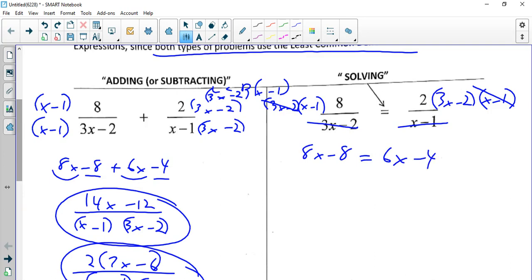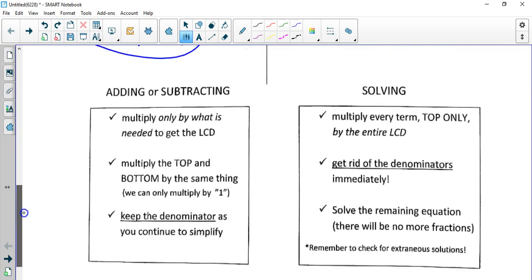And now we've got 6x. Subtract 6x to get 2x. We're going to add 8. And you get 4 divided by 2, so x equals 2. Just some summary down here.